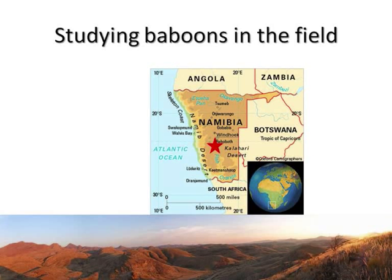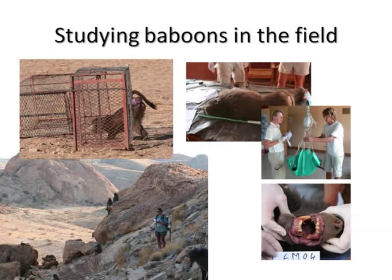Studying baboons in the field — baboons are fully habituated to the presence of observers, so you can move among individuals in the group and collect data, observing one individual or another and recording everything they do. From time to time, whenever we have enough funding, we trap all our baboons, which allows us to collect biological samples such as tissue biopsies for genetic analysis, and morphometric measures. We weigh our baboons, which allows us to derive a condition index — an index of nutritional condition — by taking the weight and controlling it by the size of the baboon. We can also look at their teeth to estimate age.